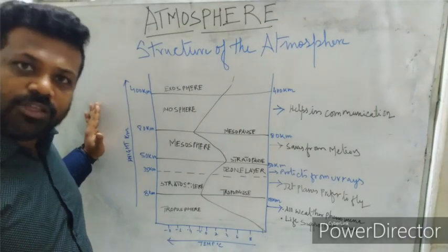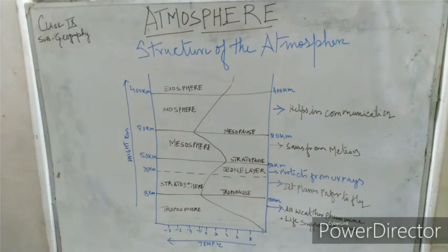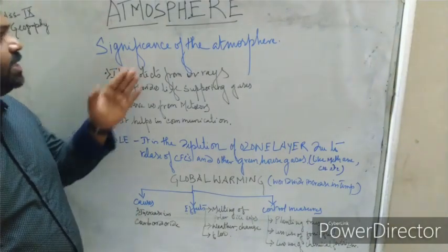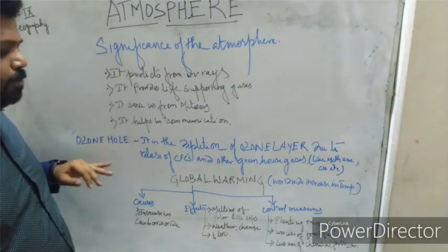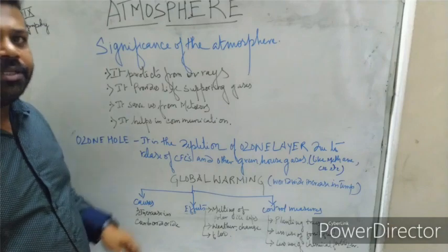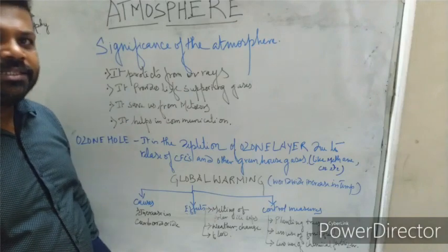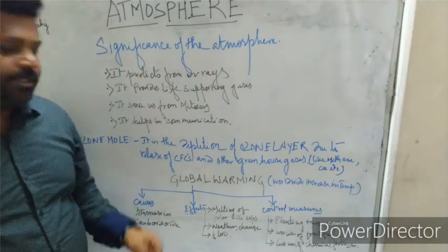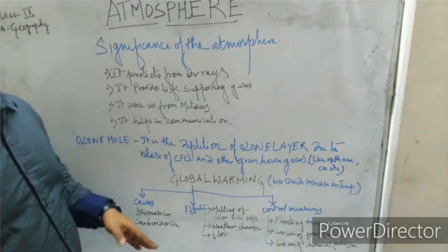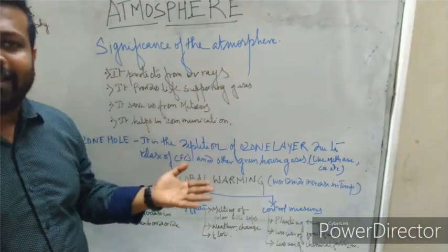Next, we will read about the significance of the atmosphere. The atmosphere protects us from UV rays, provides life-supporting gases, saves us from meteors, and helps in communication. These are the main significance or importance of the atmosphere.